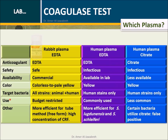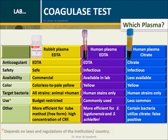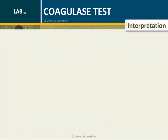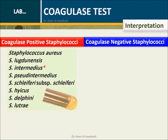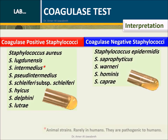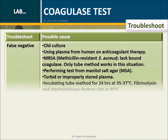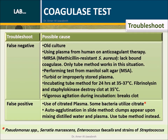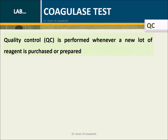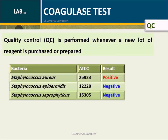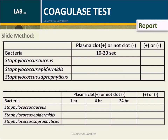Which plasma? A comparison table shows the characteristics of the three plasma types used in labs. Interpretation: Coagulase-positive staphylococci versus coagulase-negative staphylococci. A troubleshooting table shows possible causes for issues. Quality control is performed whenever a new lot of reagent is purchased or prepared; listed below are ATCC bacteria and their expected results. Use the tables below to report results.